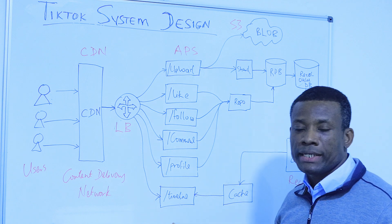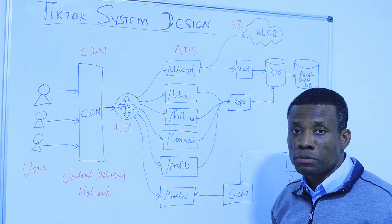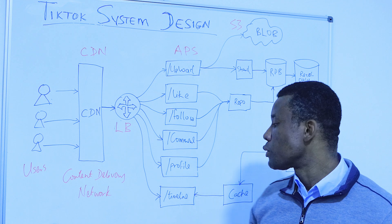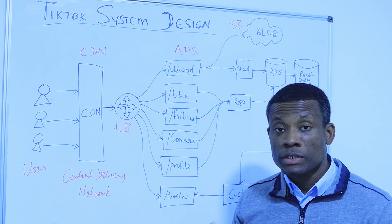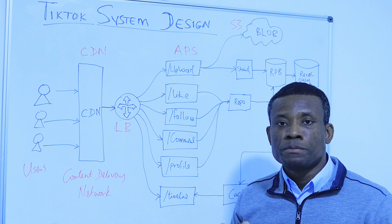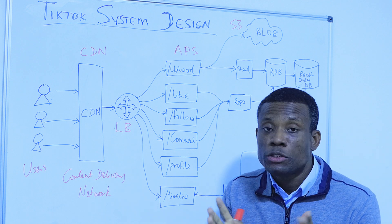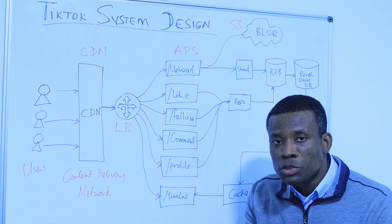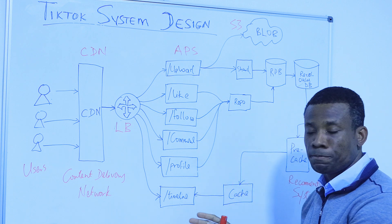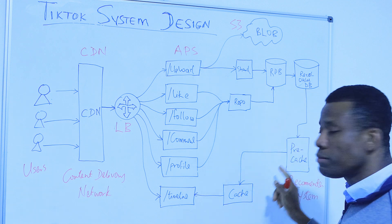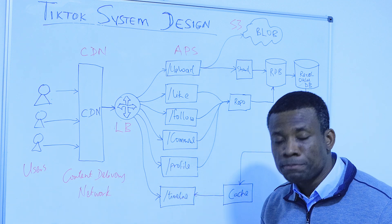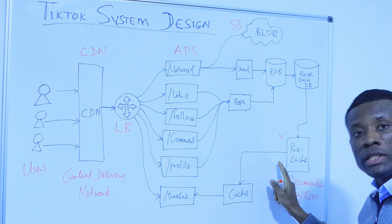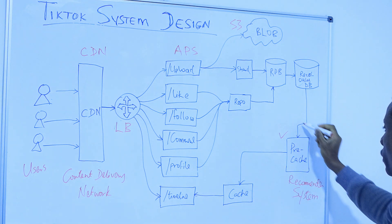The timeline is what you see when you log into TikTok — those initial videos, which we call the timeline or user feed. We don't want to generate the feed when the user logs in. We want this feed to be pre-computed and made available in the cache, so when the user opens the application, they simply get the feed from the cache. This computation to generate the timeline is very expensive, and it's actually handled here in this recommender system.